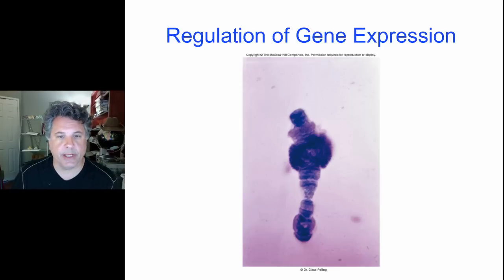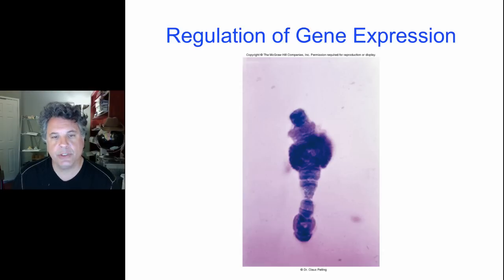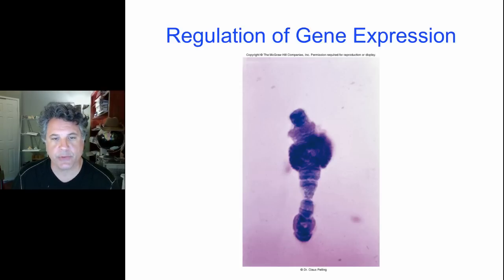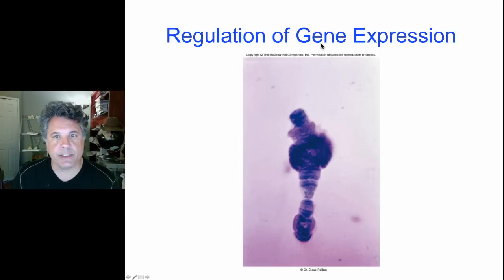The same holds for bacteria and prokaryotes. If a bacterium has a food source — a sugar source — available, it makes sense to turn on genes that enable the bacterium to utilize and break down that food source to provide energy. However, if that food source is not around, it would be wasteful for the bacterial cell to manufacture gene products required for its breakdown. So it makes sense energetically for organisms to regulate gene expression — to turn genes on and off, to throw genetic switches.